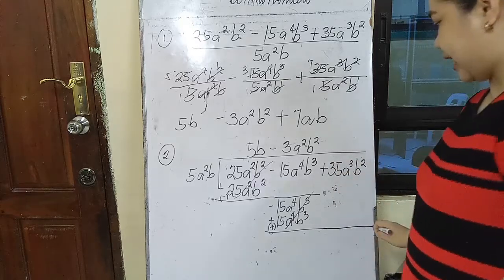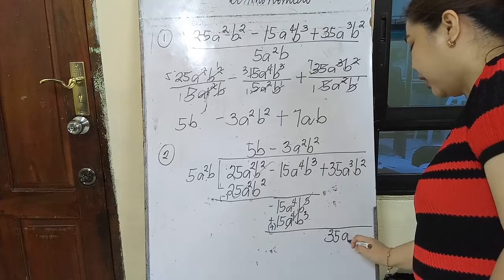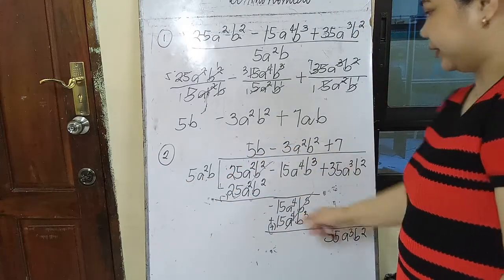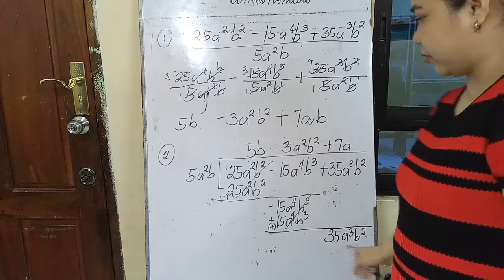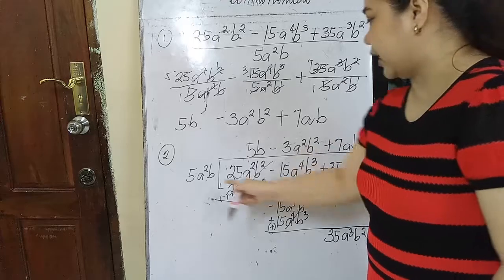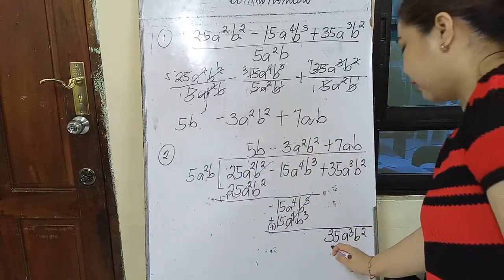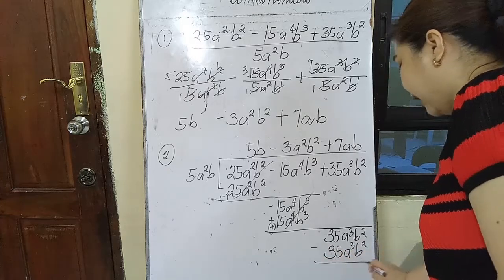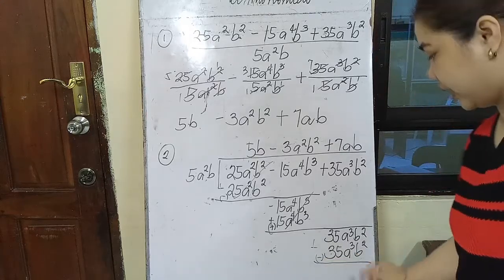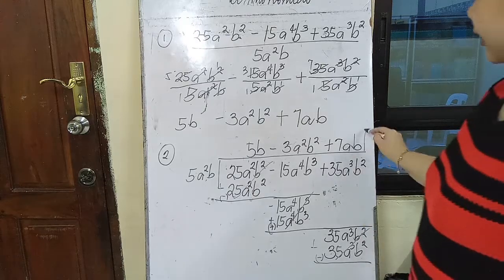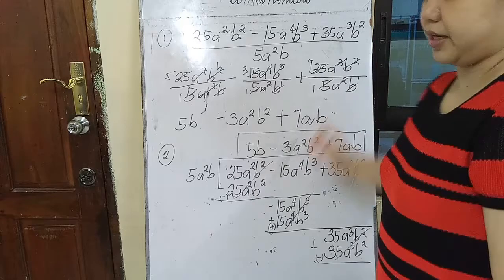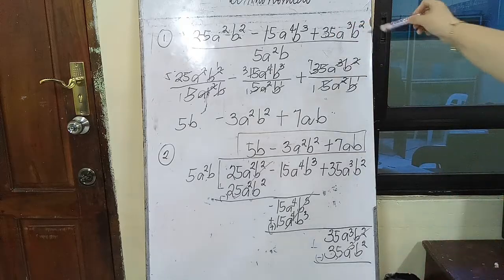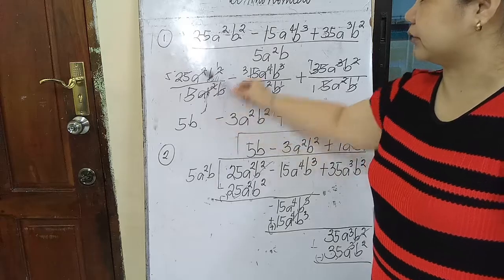Bring down the last term: positive 35a³b². So 35 divided by 5 is 7. A cubed divided by a squared is a. B squared divided by b is b. And 7ab times 5a²b is equal to 35a³b². Then subtract. Change the sign of the subtrahend, then proceed to addition. No remainder. This one is the answer — it's the same as the first method.